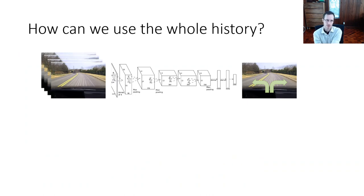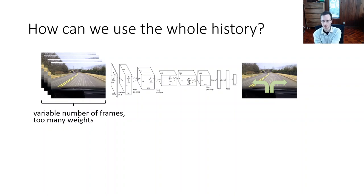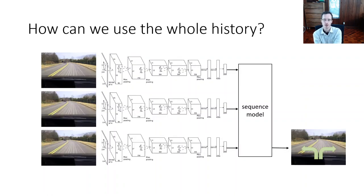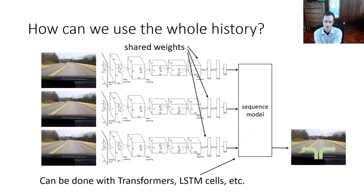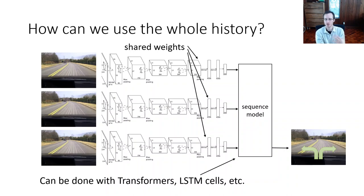To use the whole history, we just need a policy representation that can read in the history of observations. We would use some kind of sequence model — encode all past frames with a convolutional encoder and feed them through a sequence model such as an LSTM or a transformer, then predict the current action based on the entire sequence. Setting up these models is a little involved, but there's nothing special for imitation learning here — the same approaches used for video processing in supervised learning, whether LSTMs, transformers, or temporal convolutions, can be used here.